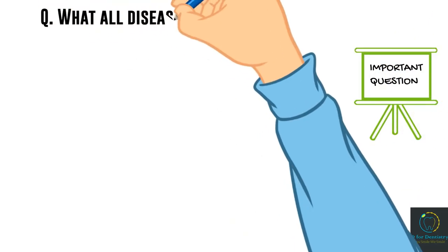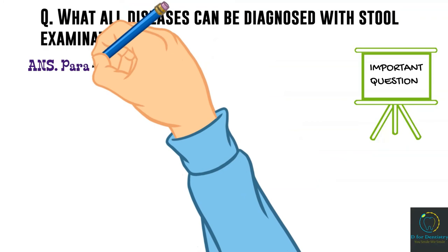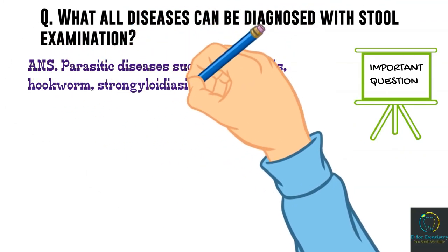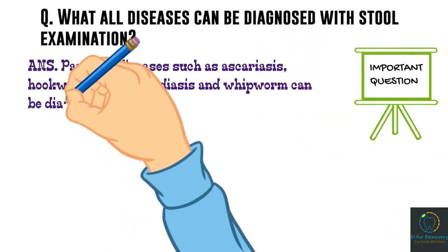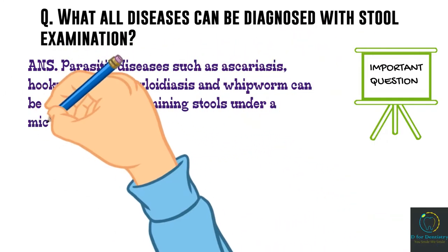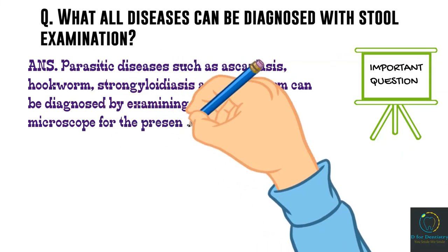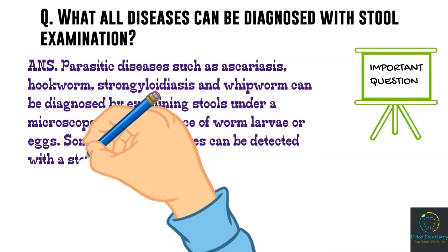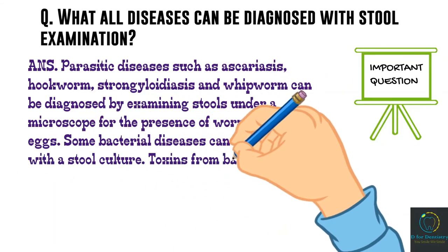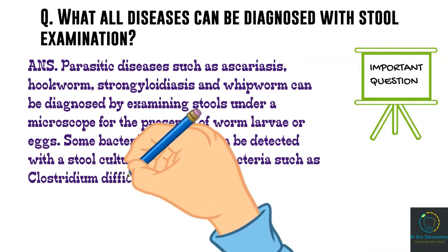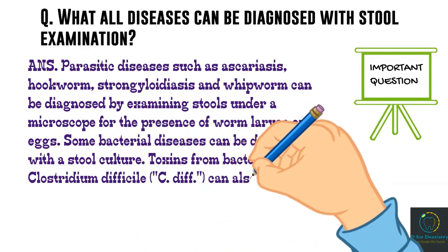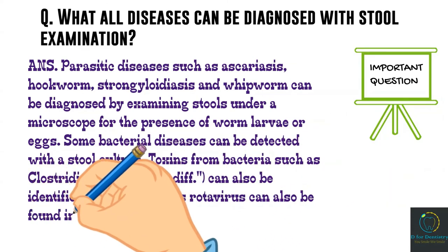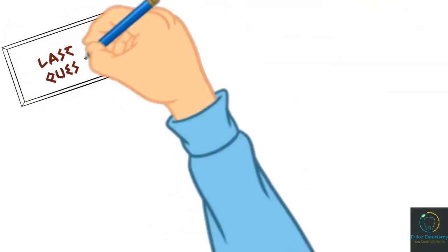What diseases can be diagnosed with stool examination? Parasitic diseases such as ascariasis, hookworm, strongyloidiasis, and whipworm can be diagnosed by examining stools under a microscope for presence of worm larvae and eggs. Some bacterial diseases can be detected with a stool culture. Toxins from bacteria such as Clostridium difficile can also be identified. Viruses such as rotavirus can also be found in stools.